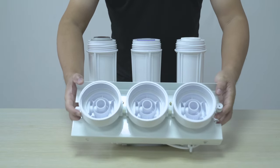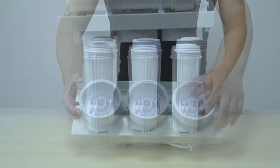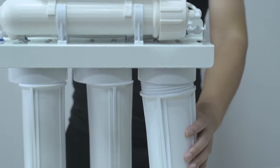Once all filter bowls are in place, tighten all three against the filter head using the filter bowl wrench.